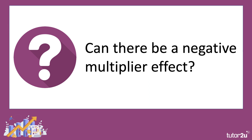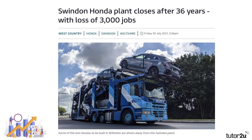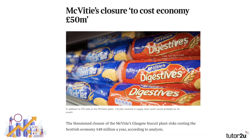Can there be a negative multiplier effect — can this work in reverse? The answer is yes. The negative multiplier effect occurs when an initial leakage or withdrawal of spending from the circular flow leads to knock-on effects and a bigger final drop in GDP. We often associate this with major plant closures where hundreds or thousands of jobs are lost. For example, in summer 2021, Swindon's Honda factory closed after nearly 40 years, costing an estimated 3,000 jobs and affecting other businesses that acted as suppliers to the factory.